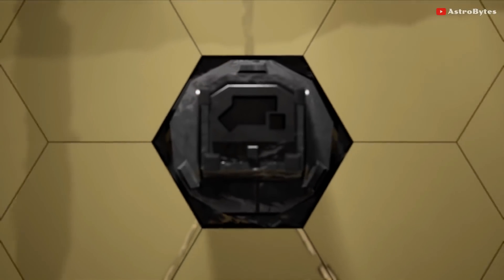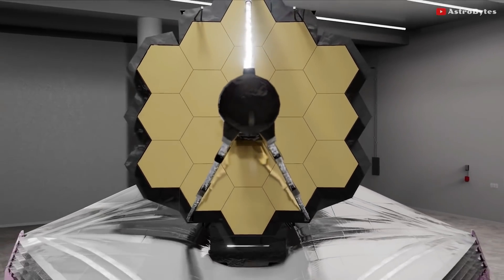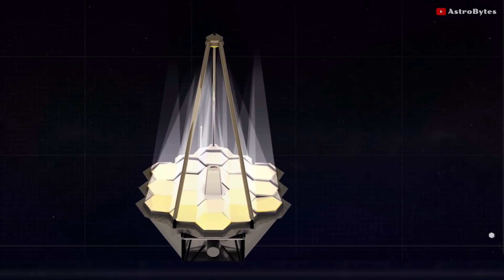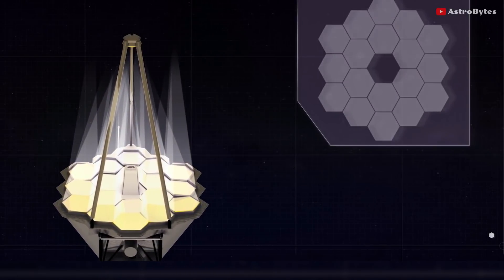To align the telescope's mirrors, engineers will take 18 separate out-of-focus images of this star using each of its mirrors. A supercomputer will then determine exactly how each image must be oriented to bring the telescope into focus.